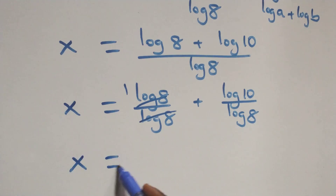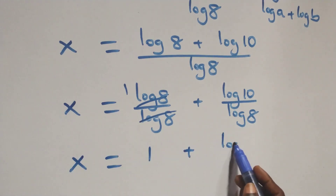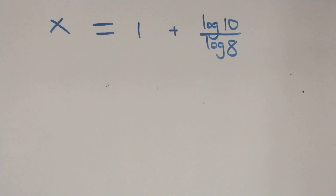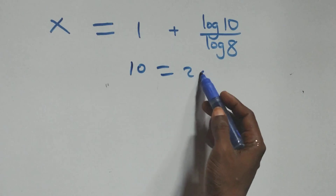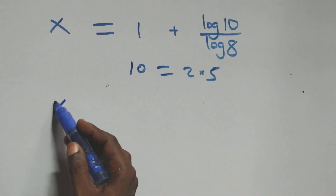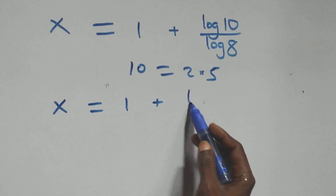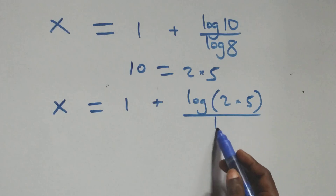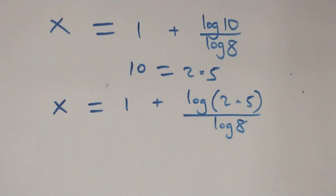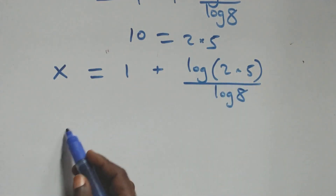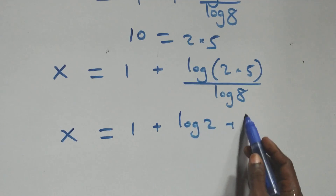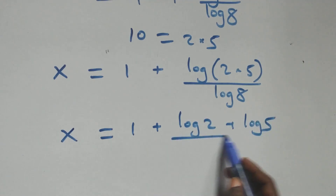We now have x = 1 + log(10)/log(8). Then we rewrite log(10)/log(8): since 10 = 2×5, this becomes log(2) + log(5) over log(8).